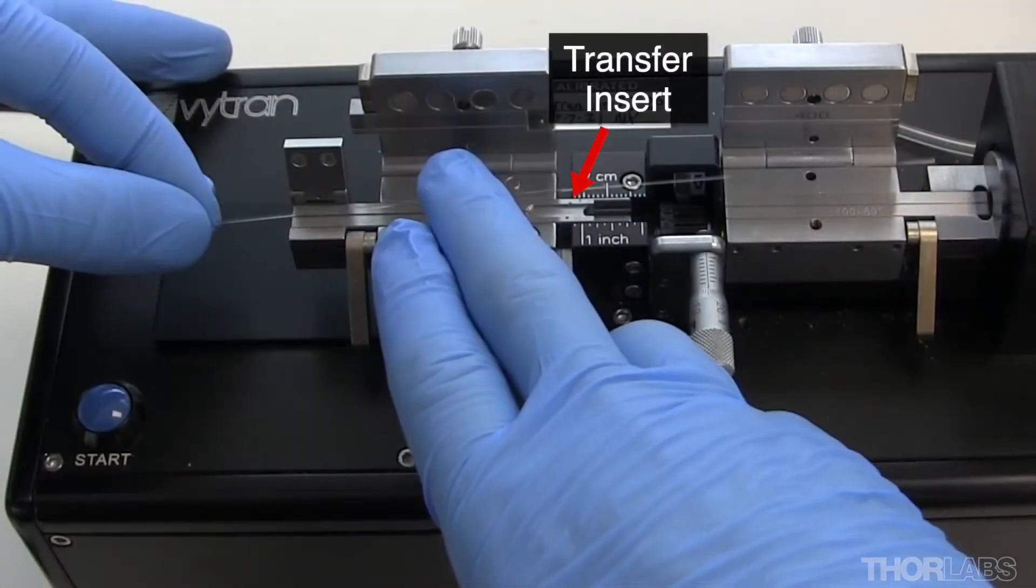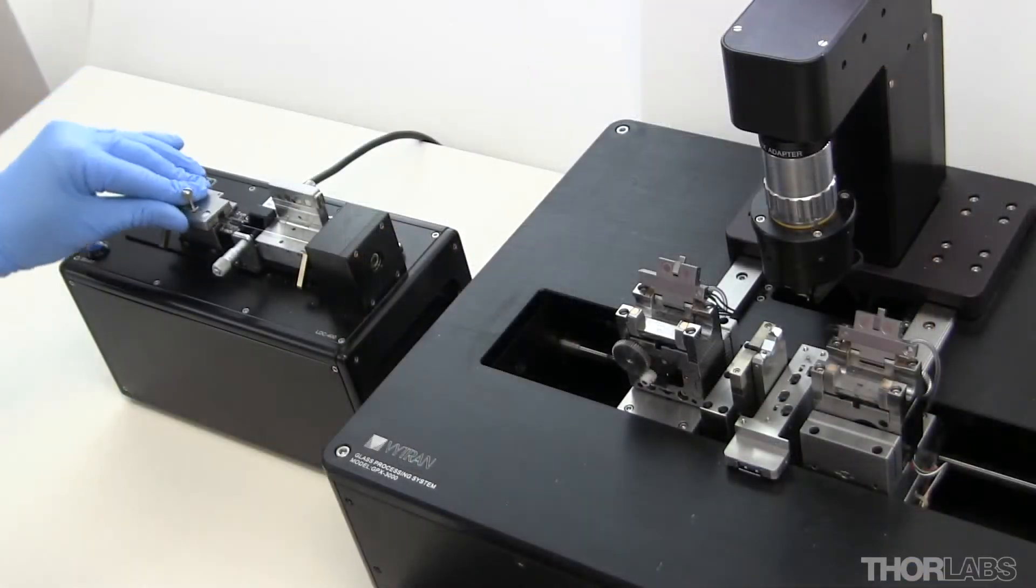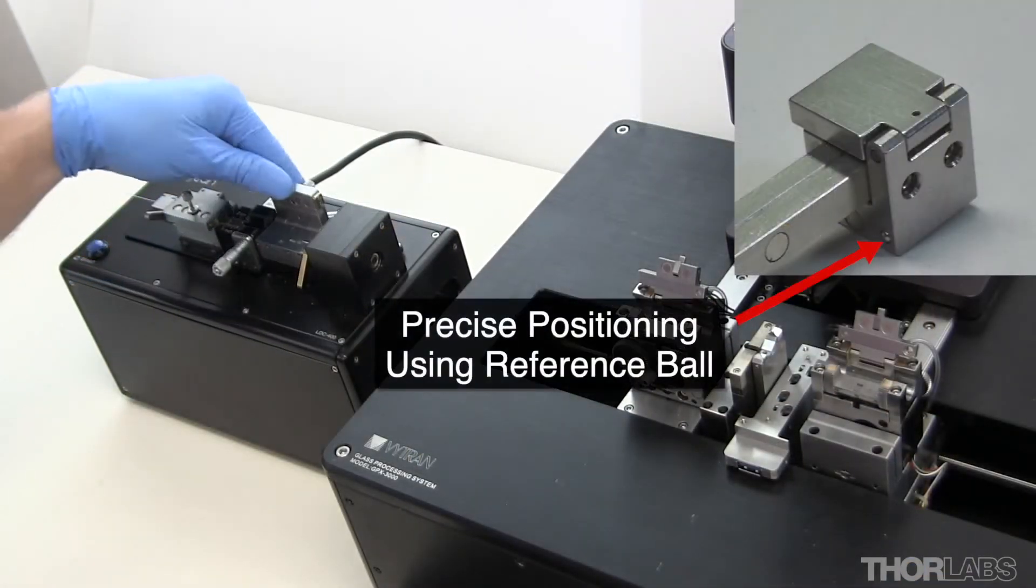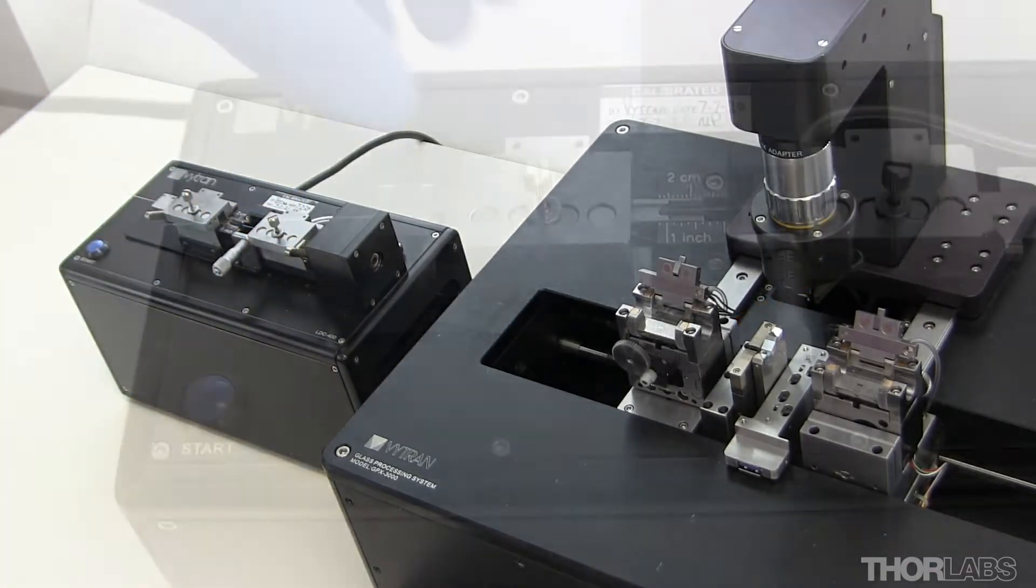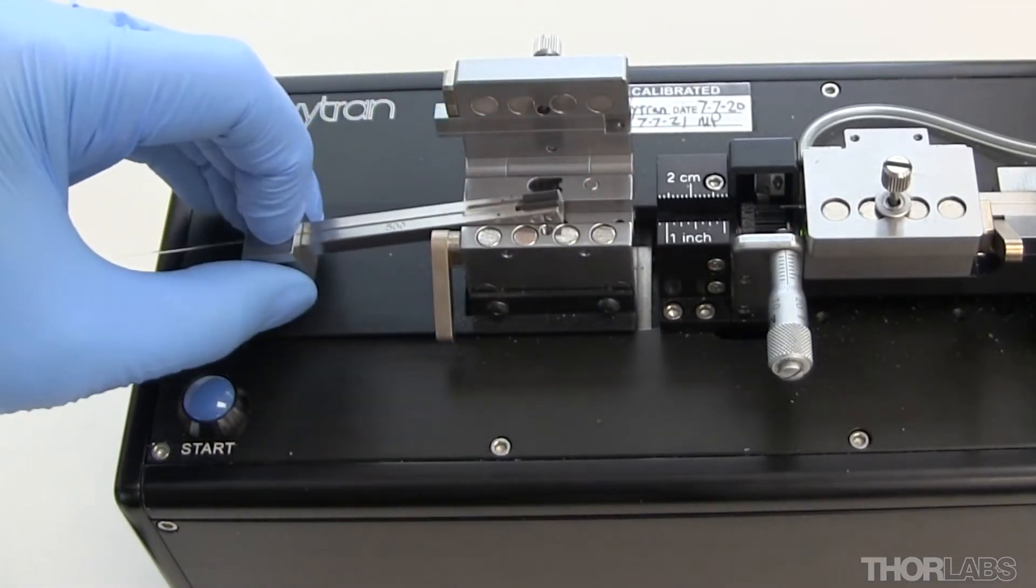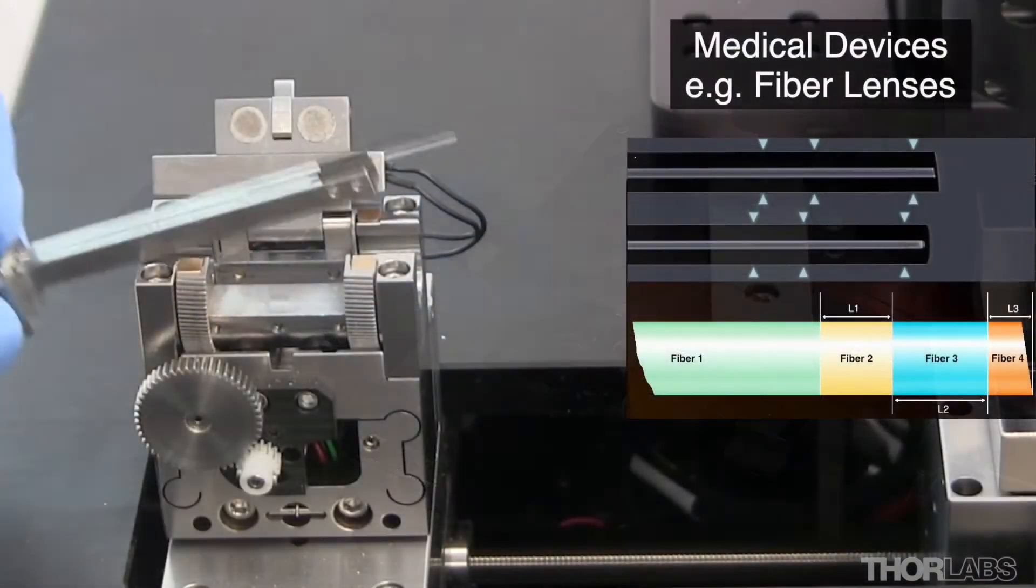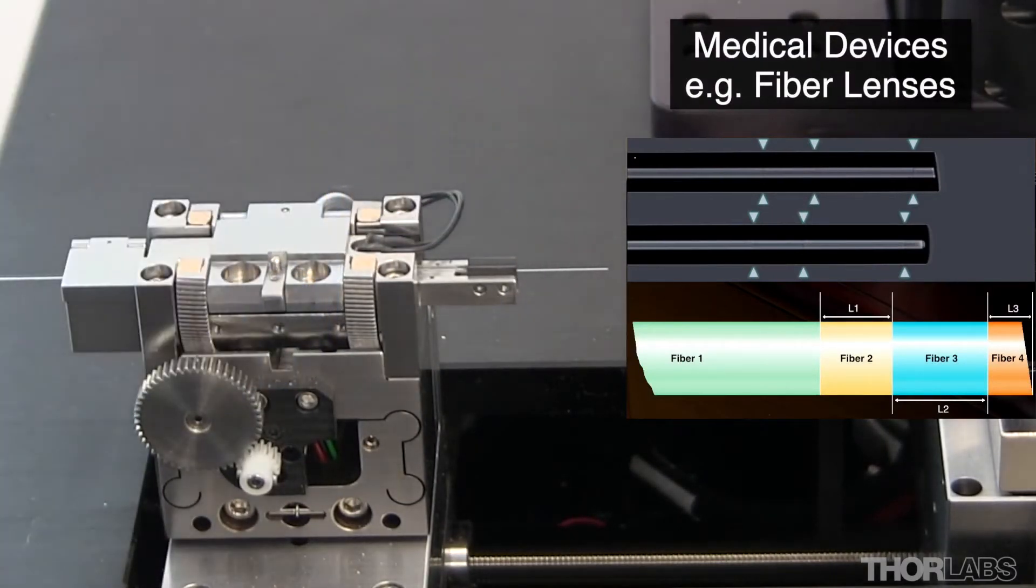The use of a transfer insert assembly maintains accurate fiber position registration as the fiber is moved from the cleaver to the glass processor or splicer. This allows precision fiber optic assemblies using fused optical components to be manufactured, such as medical probes and sensing devices.